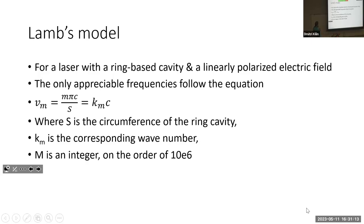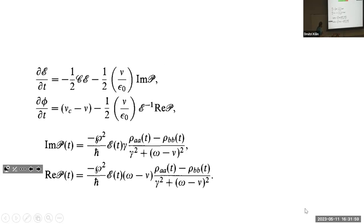So what was Lamb's model? Lamb's model for a laser, taking the simplest and easiest to calculate example, has a ring-based cavity with a linearly polarized electric field. When you have that set up, the only appreciable frequencies that you can get follow the equation Vm = mπC/S = KmC, where S is the circumference of the ring cavity, Km is the corresponding wave number, and M is an integer on the order of 10^6.